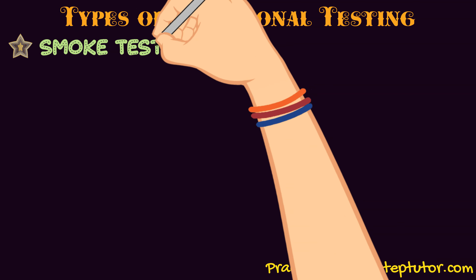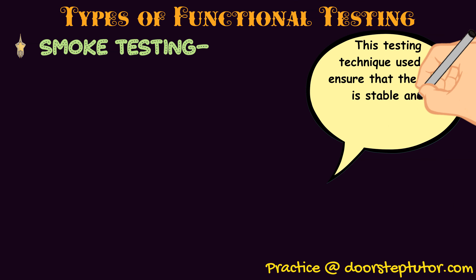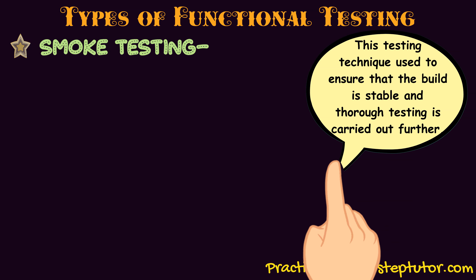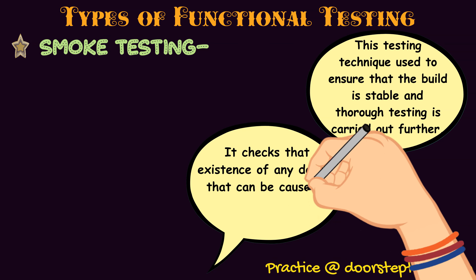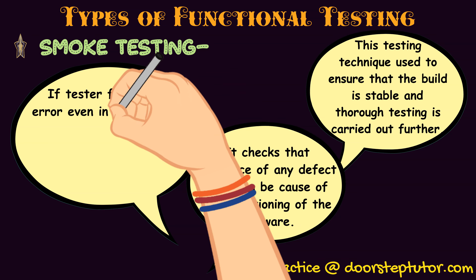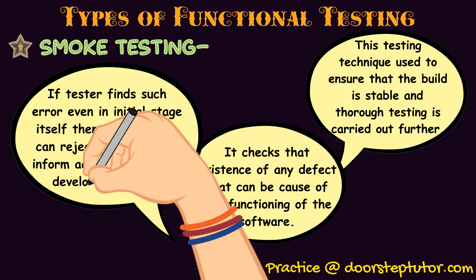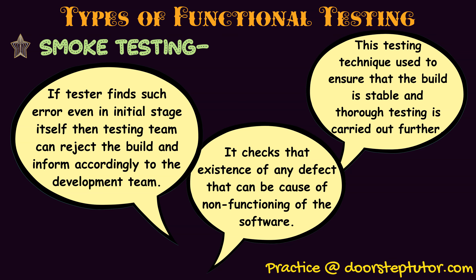Next is smoke testing. Smoke testing is a technique used to ensure that the build or structure which has been developed is stable enough for further testing — it must not cause any errors or bugs. If the tester finds any bug or error in the initial stages, the software team will reject the build and create a new one. That is smoke testing.